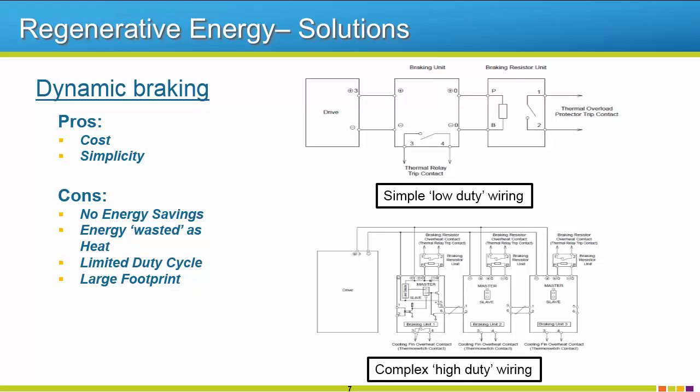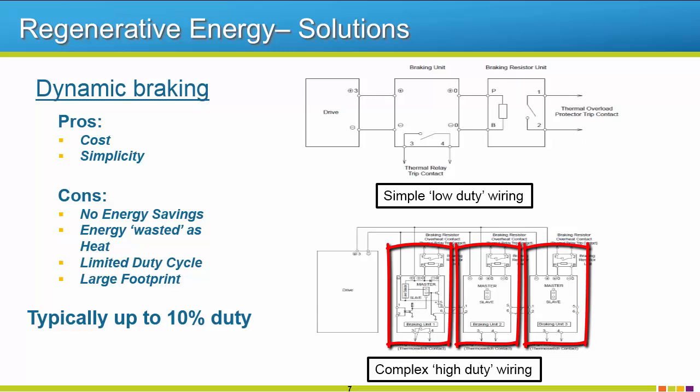Additionally, when an application calls for a higher duty cycle due to increased regen, the size of the braking transistor and resistor will get larger and could multiply. Braking modules are run in parallel. This results in a larger footprint and more wiring. Dynamic braking is most commonly used on applications requiring a duty cycle of 10% or less, but it is not limited to that number.